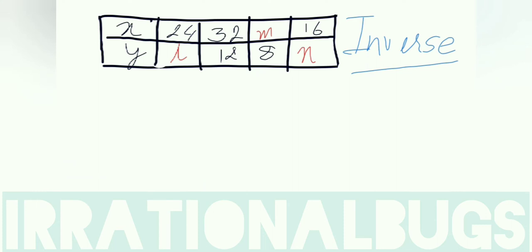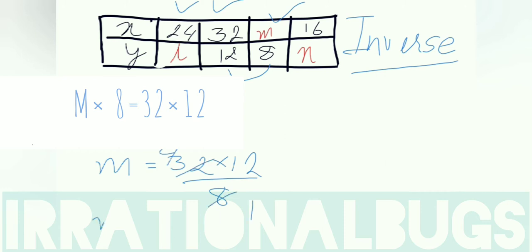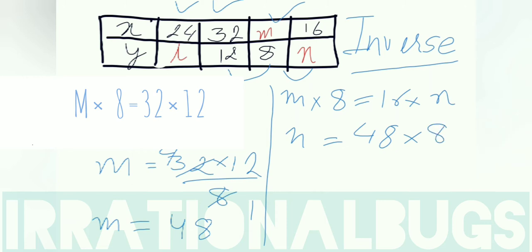Now the next part, we need to find the value of m. So m into 8 equals to 32 into 12. M is equal to 32 into 12 upon 8. So m is equal to 48 is our answer. Last part I can use any of the first three. I will use last two - m into 8 is equals to 16 multiply n. Put m value 48. So n is equals to 48 into 8 upon 16, which is 24, our answer.